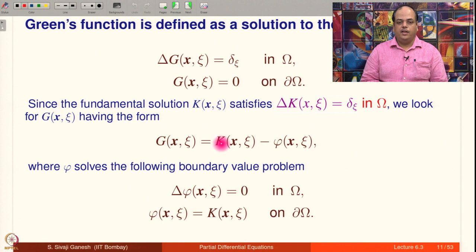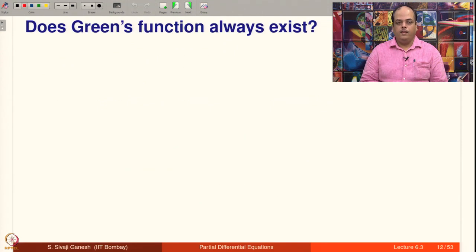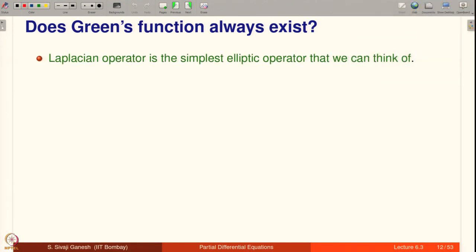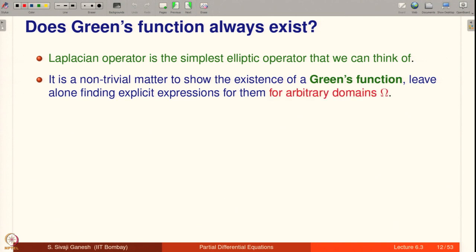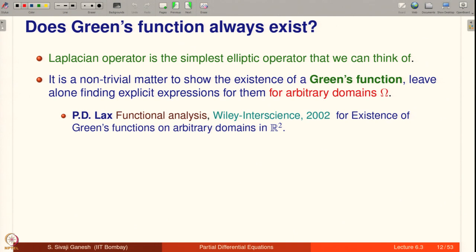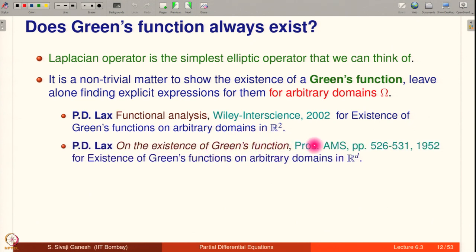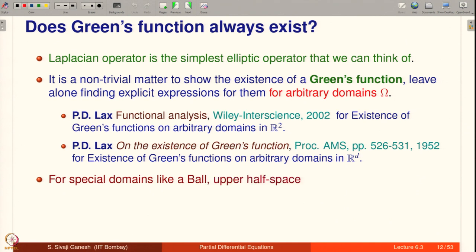So if you want to know the Green's function, since we already know k, what remains is to find φ. The question is: does Green's function always exist? Even for the simplest elliptic operator — the Laplacian — it is a non-trivial matter to show existence of a Green's function, leave alone finding explicit expressions for arbitrary domains Ω. References for the discussion on existence are Lax's book on functional analysis for arbitrary domains in R^2, and a paper by Lax in the Proceedings of the AMS for arbitrary domains in R^d. For special domains like a ball or upper half-space it is easy to construct the Green's function.